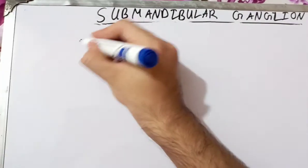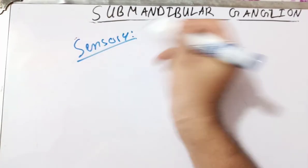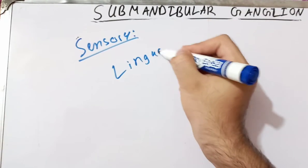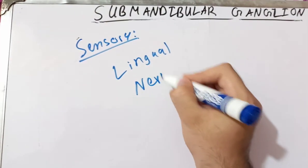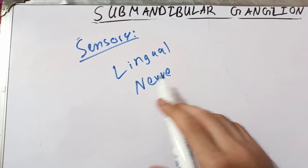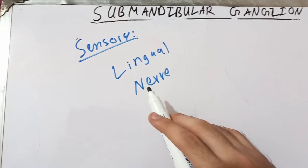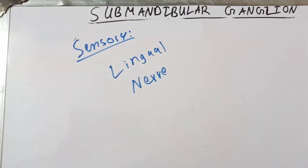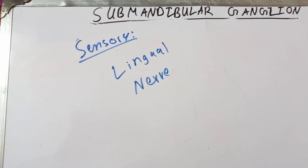The sensory supply of the submandibular ganglion comes from the lingual nerve, which is closely related to the submandibular ganglion. These fibers also do not relay here — they just pass through the ganglion and support it. There is a separate video on my channel about the otic ganglion. You can check it out. Thank you.